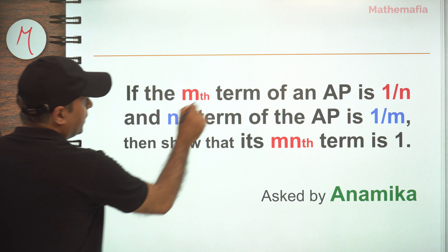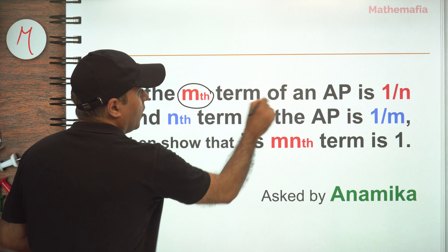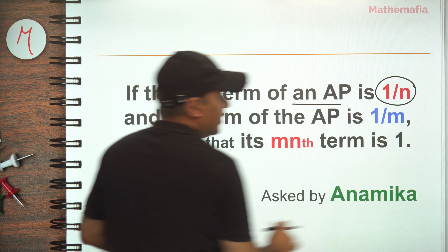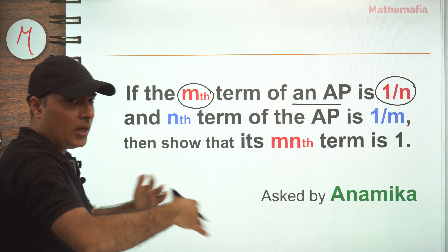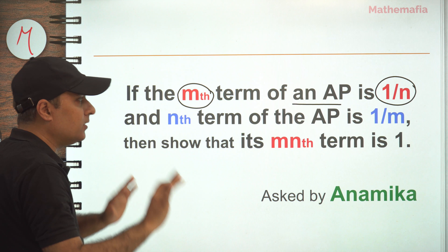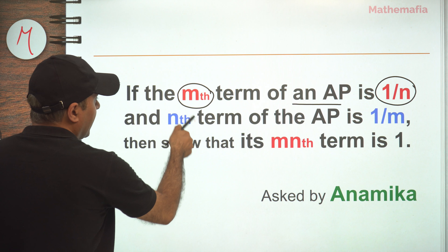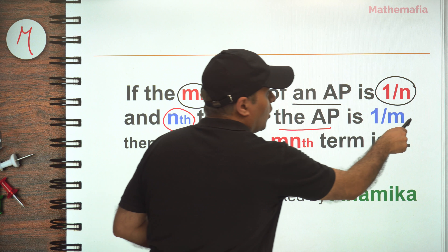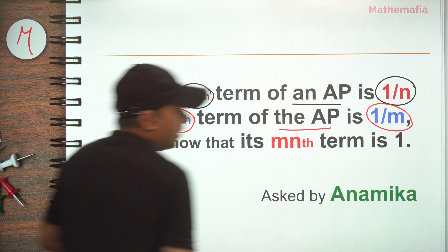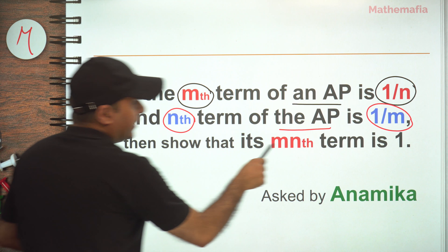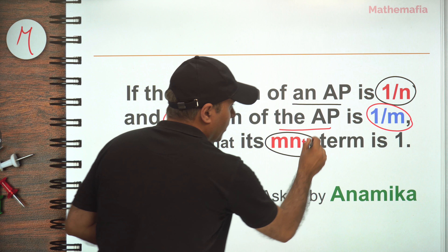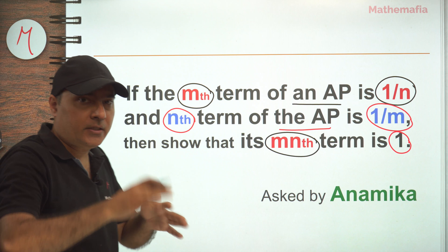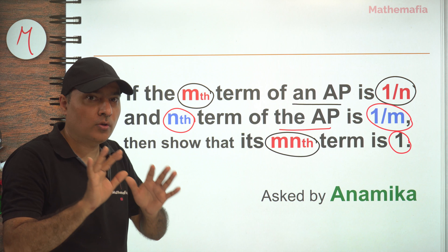So what this question says: if the mth term of an AP is 1/n, and the nth term of the same AP is 1/m, then show that its mn-th term is 1. I know it's a bit confusing to understand, so let me explain it with the help of very simple examples.